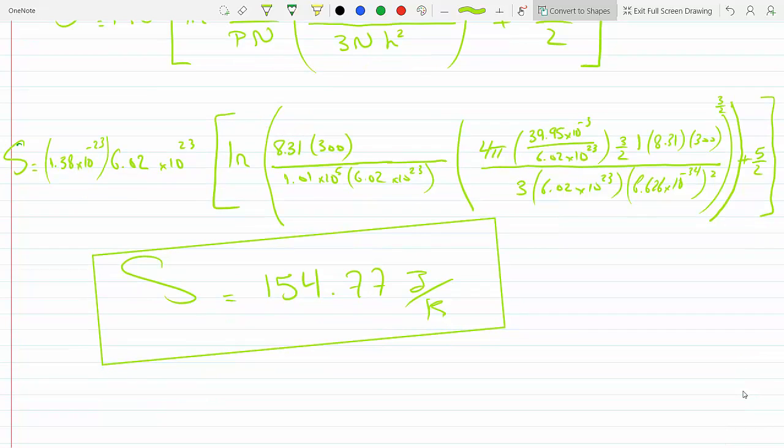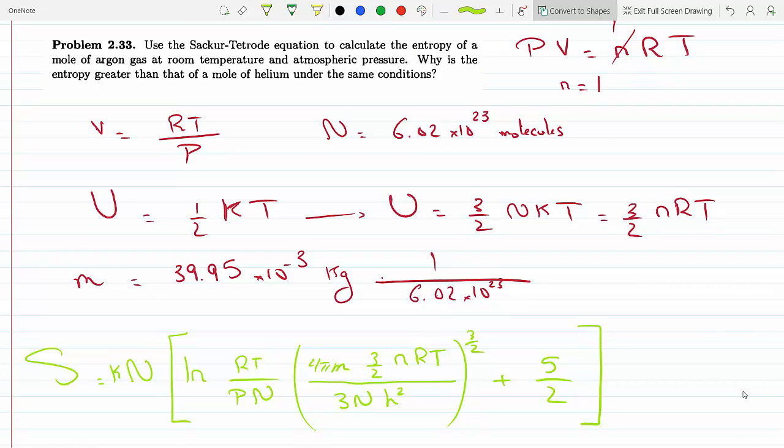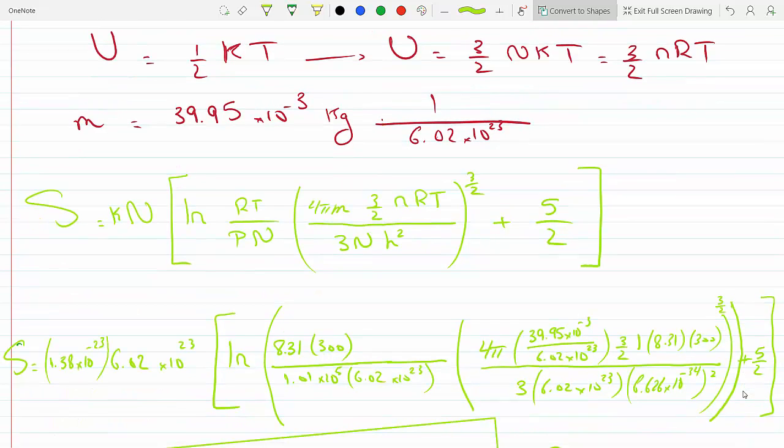Now it says, why is the entropy greater than a mole of helium under the same conditions? Well, the only thing that changes for one mole of helium is the mass of one atom of helium, and you can see that the mass appears in the numerator.